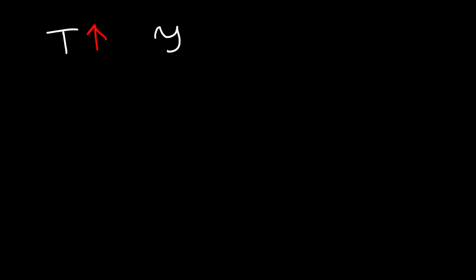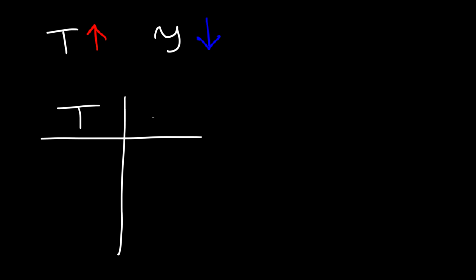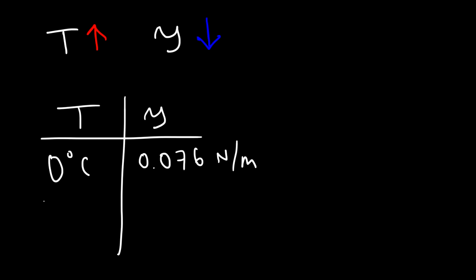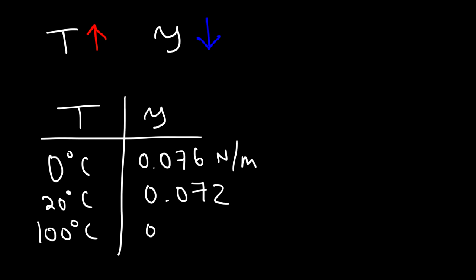Now let's talk about the relationship between temperature and surface tension. If you increase the temperature, the surface tension decreases. For water: at 0°C the surface tension is 0.076 N/m; at 20°C it decreases slightly to 0.072 N/m; and at 100°C it's 0.059 N/m. So as we increase the temperature of water, the surface tension of water decreases.